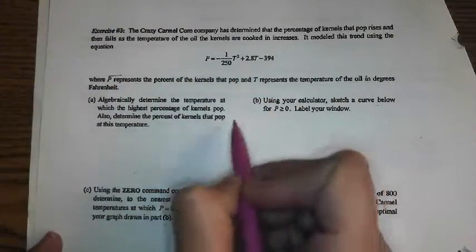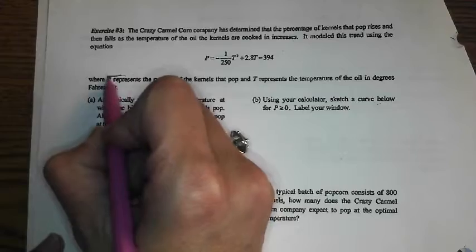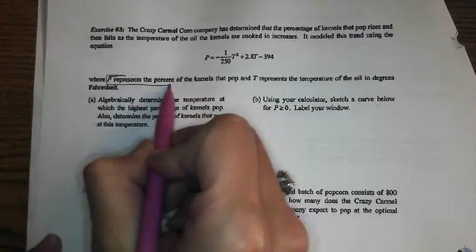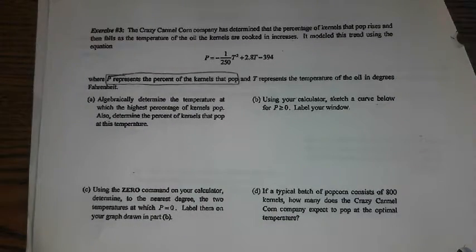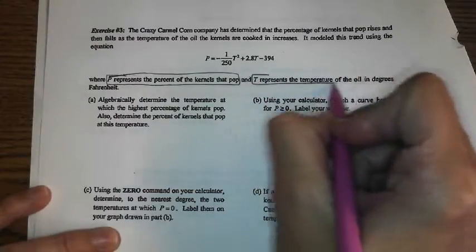Where P, I don't really care what the equation is, I'm just searching for what the variables mean. P represents the percent of kernels that pop, and T represents the temperature of the oil.